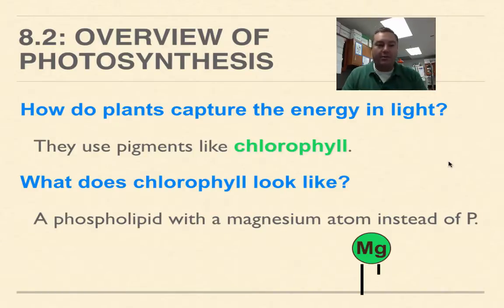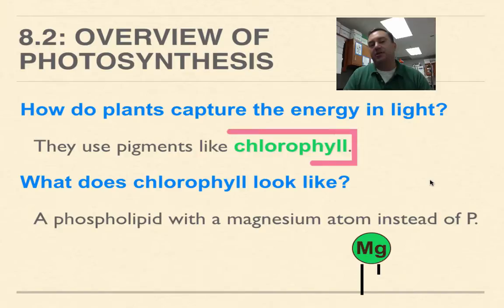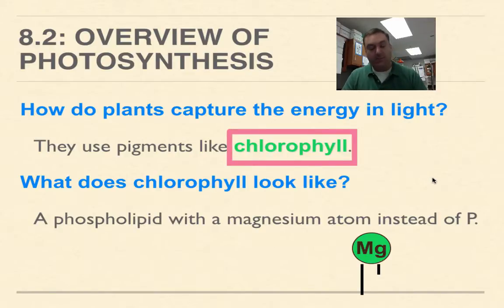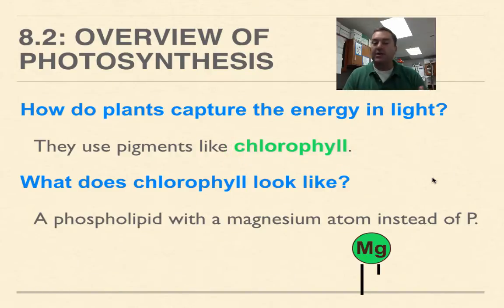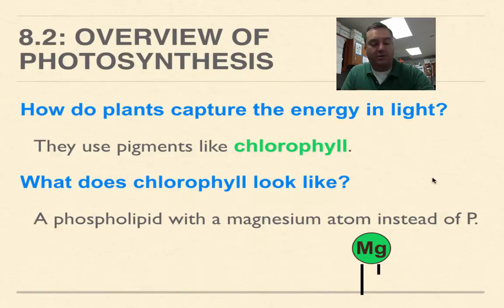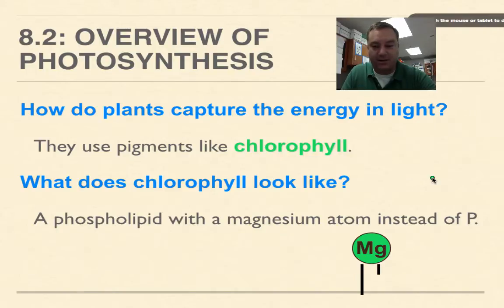To capture that energy in sunlight, plants use a pigment called chlorophyll. Pigments are molecules that absorb the energy of light and reflect others. In the case of chlorophyll, it absorbs all colors of light with the exception of green, which is why plants appear green.